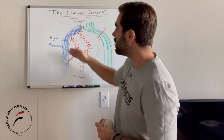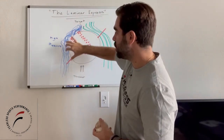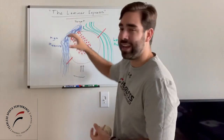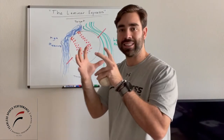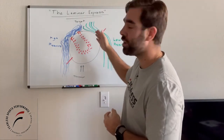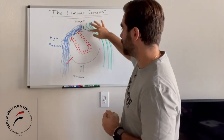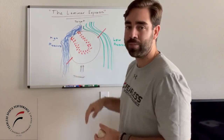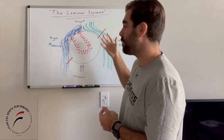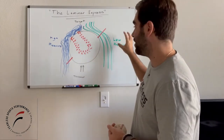That turbulent airflow creates a high pressure system here. All that air, because of the laces, is being compressed into this high pressure system, but we don't have that on the other side. On the other side, the air is able to smoothly pass the ball, and you don't get that high pressure system. So it's a lower pressure system on this side of the ball.